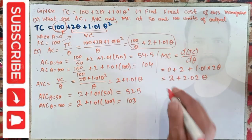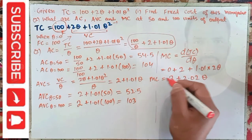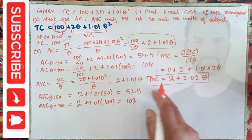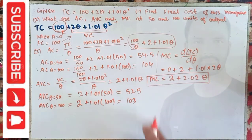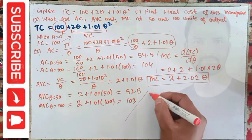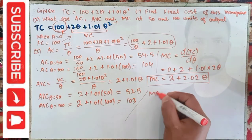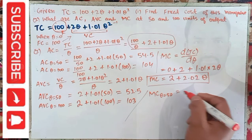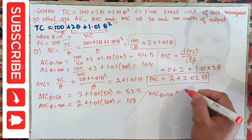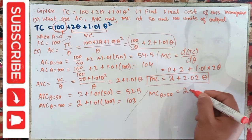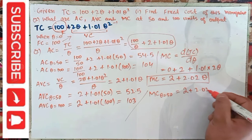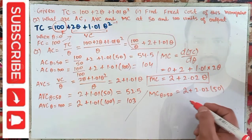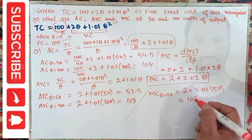Marginal cost when Q = 50: just plug Q = 50 into the MC function. We have 2 + 2.02 × 50, which comes out to be 103.